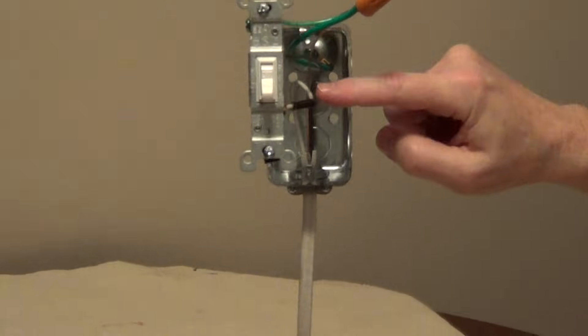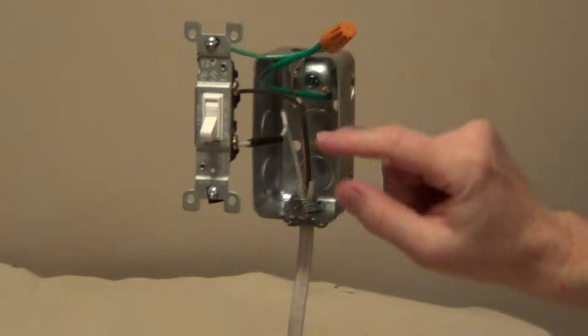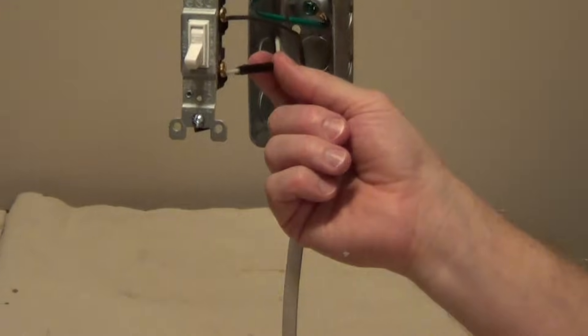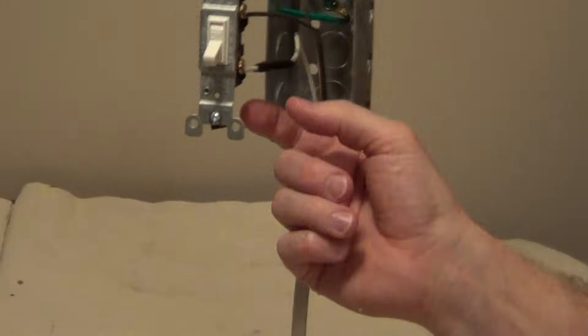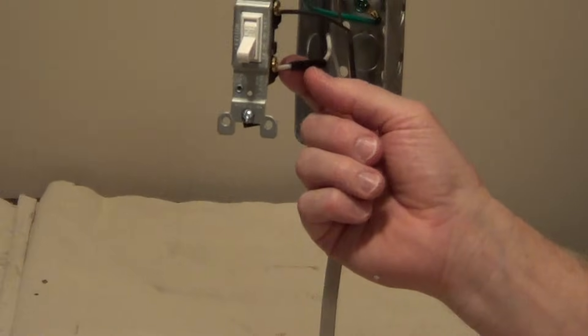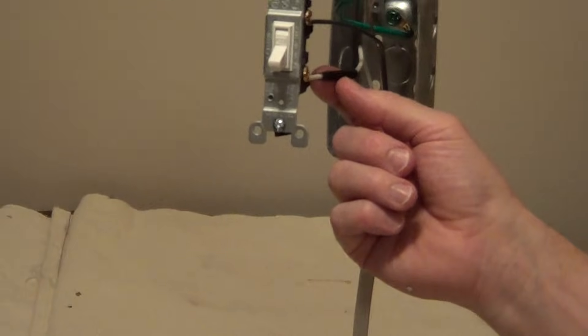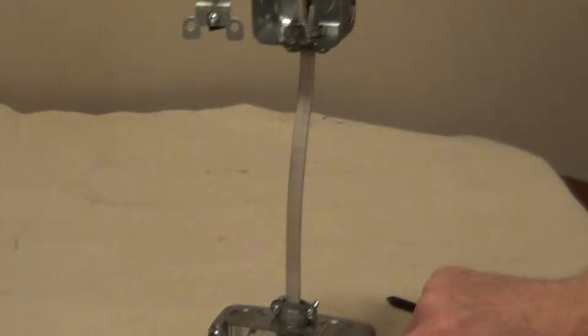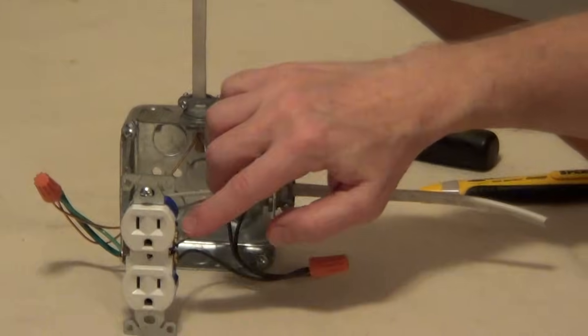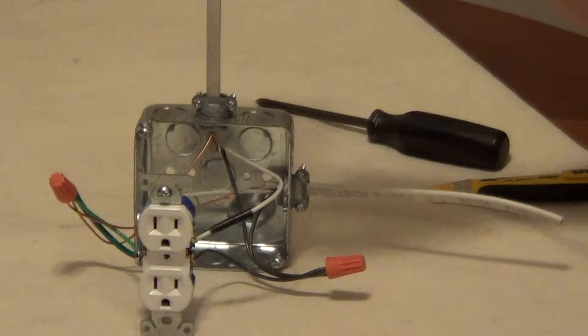Now from the switch, because we're using a two-wire cable, this white wire, which is normally a neutral, we have to mark it with black tape to let everybody know that this is a hot wire. It comes down to the top part of this outlet and now this top part will be controlled by the switch.